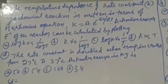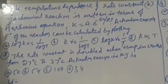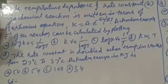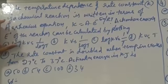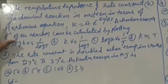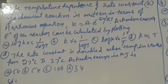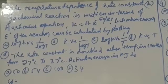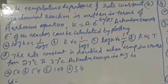Next students, some objective bits related to factors which influence the rate of reaction. The temperature dependence of rate constant of a chemical reaction is written in terms of the Arrhenius equation: K is equal to A into e to the power minus Ea by RT. Activation energy and frequency factor are calculated by plotting a graph between log K and 1 by T. This is the correct option.